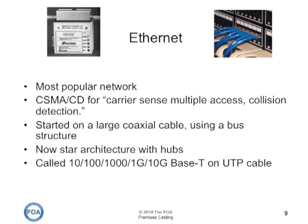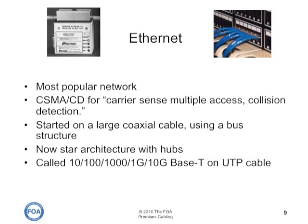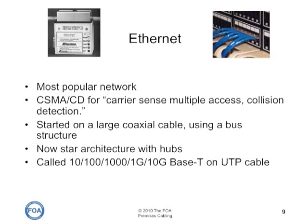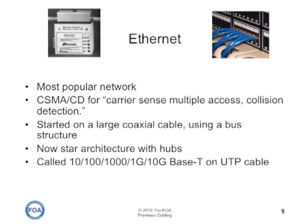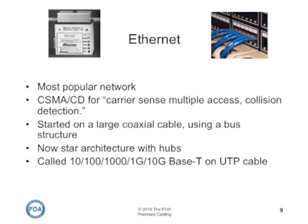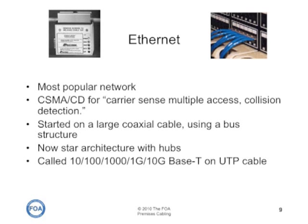Most networks today are based on Ethernet, a network protocol that looks for devices transmitting on the network, and if the network is not busy, the device can go ahead and transmit its data. It started many years ago on a large coaxial cable, like cable television cable, using what we call a bus structure and special taps called a vampire tap, that looks like the device in the upper left hand corner of the slide. Now it works on a star architecture with hubs and switches, using unshielded twisted pair cable, fiber optic cable, or wireless connections. On UTP cable, it's called 10BaseT or up to 10GBaseT on UTP.